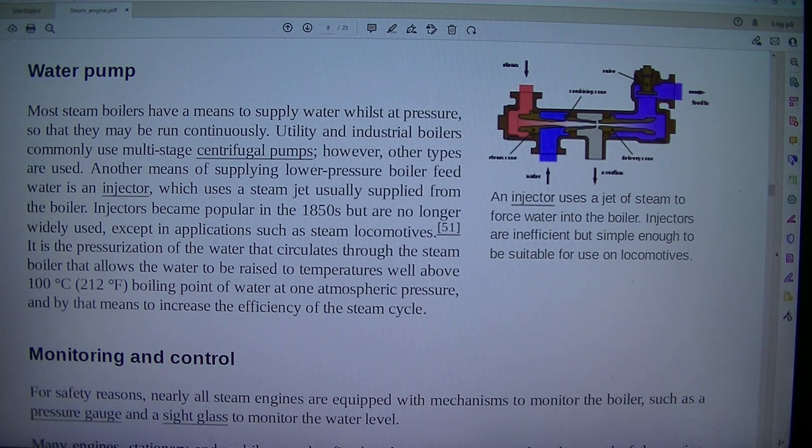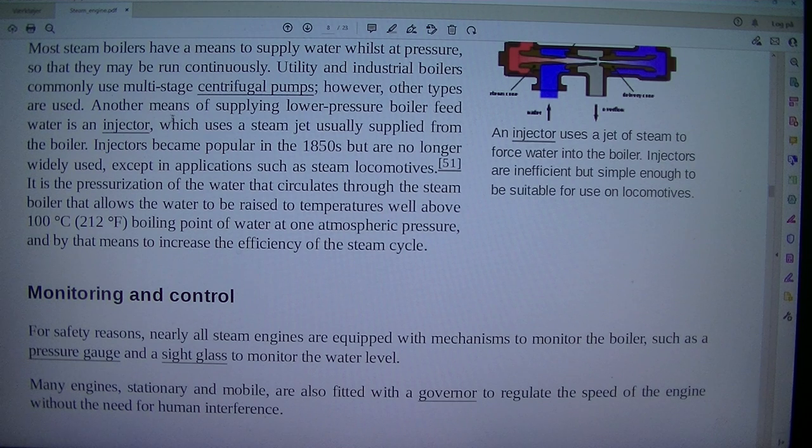Most steam boilers have a means to supply water whilst at pressure so that they may be run continuously. Utility and industrial boilers commonly use multistage centrifugal pumps. However, other types are used. Another means of supplying lower pressure boiler feed water is an injector, which uses a steam jet usually supplied from the boiler. Injectors became popular in the 1850s but are no longer widely used, except in applications such as steam locomotives.